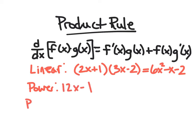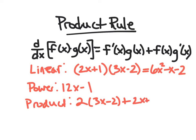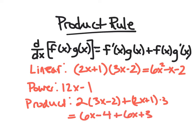Now let's see what the product rule gives. The derivative of the first, (2x + 1)', is 2, times the original second (3x − 2), plus the original first (2x + 1) times the derivative of the second, which is 3. So this is 6x − 4 + 6x + 3, or 12x − 1. They agree, and this will be true in general.